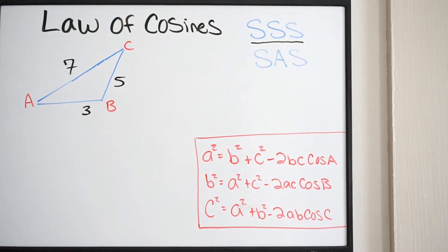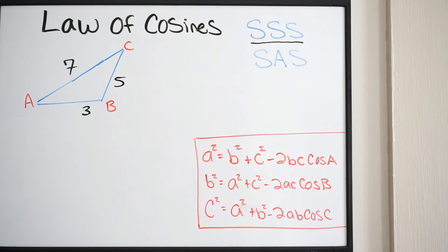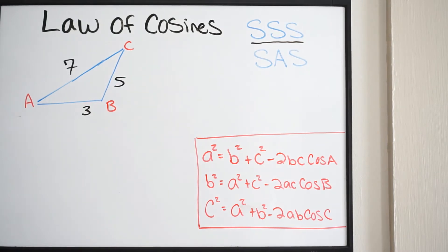You could technically go through the whole problem and solve for each of your angles using the law of cosines without worrying about picking the biggest angle first. But if you're going to find one angle and then use the law of sines to find the remaining angles, you need to pick the biggest angle first using the law of cosines, that way you get the right answer at the end.